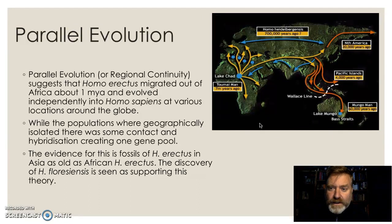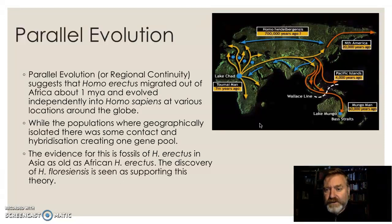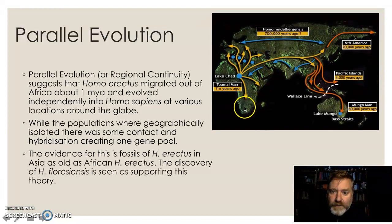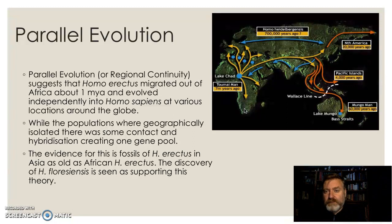Parallel evolution, or regional continuity as Alan Thorne — late professor at the Australian National University — suggested, says that Homo erectus did arise in Africa and evolved out and colonized the world, but then at various locations across the planet we see new species arising. So Homo sapiens are rising in a variety of locations. We see the Neanderthals and the Denisovans, and of course there's a track down to Naledi. There's a great deal of information that can be used to suggest this is a possible theory. New discoveries like Floresiensis and Denisovans give some more support to this theory than in the past, but it's still not considered the major theory by most people.